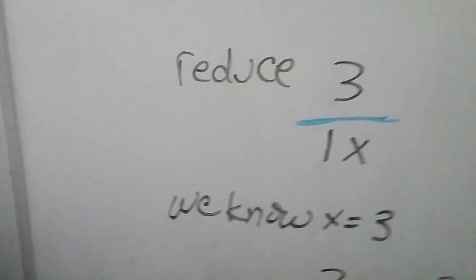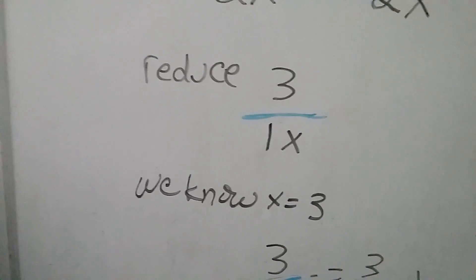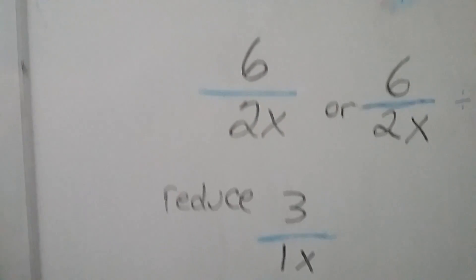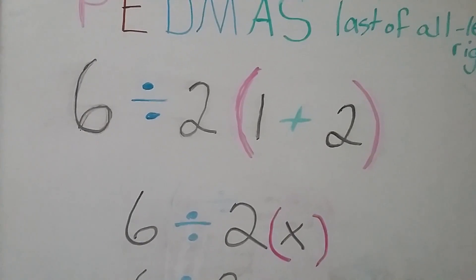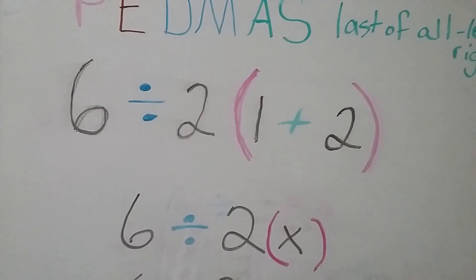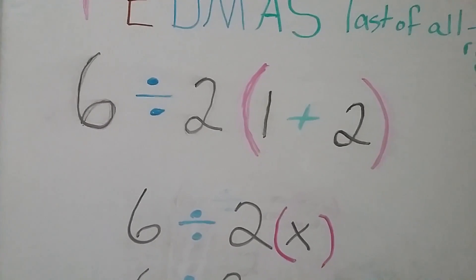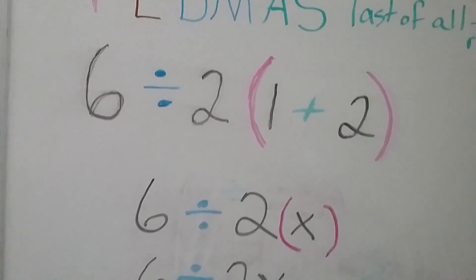Now the simplest way is if we know x equals 3. Because if we go back up to our original problem, we've made x out of 1 plus 2. So we know in this problem that x equals 3 because 1 plus 2 equals 3.